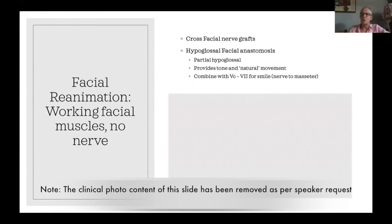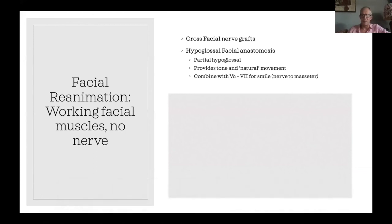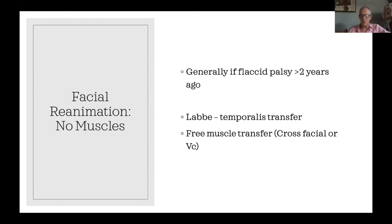For patients with a flaccid palsy, management depends on whether they have muscles and a nerve that can be used. Our go-to solution is a partial facial-hypoglossal anastomosis — part of the hypoglossal nerve to the whole facial, providing tone and relatively natural movement. Masseter-to-facial anastomosis gives them a smile. Cross-facial nerve grafts are good because they can produce a spontaneous smile, but generally only used in the under-40s. If the flaccid palsy has been present for many years and the muscles haven't worked, we'd do a temporalis transfer or even a free muscle transfer using gracilis, driven by either a cross-facial graft or nerve to masseter.